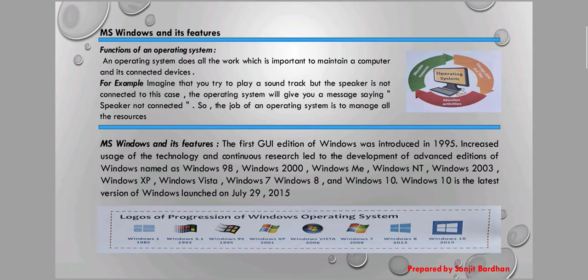The function of an operating system is a very important part. An operating system does all the work which is important to maintain a computer and its connected devices. For example, if you try to play a soundtrack but the speaker is not connected, the operating system will give you a message saying the speaker is not connected. The operating system finds the problem and notifies you. The main job of an operating system is to manage all the resources.